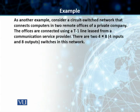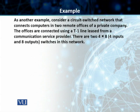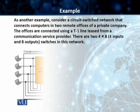In another example, we have a circuit switch network connecting two remote offices of a private company. The business has leased a high-speed T1 line from a communication service provider to connect these two remote offices. They are using two four-by-eight switches — four inputs and eight outputs — in this network.